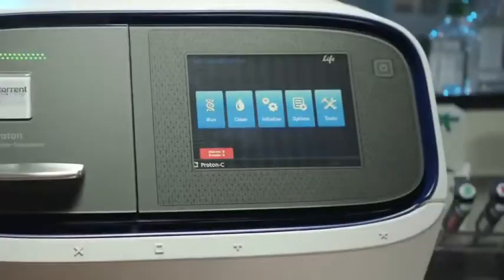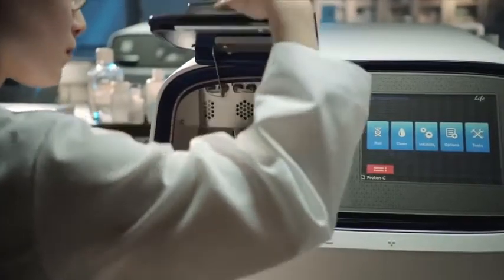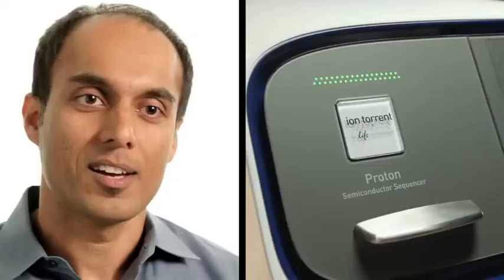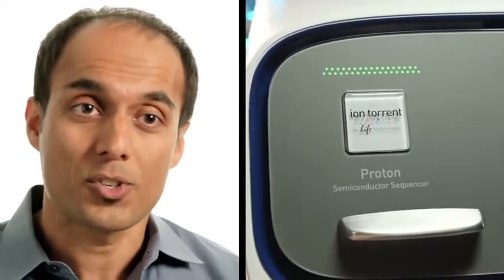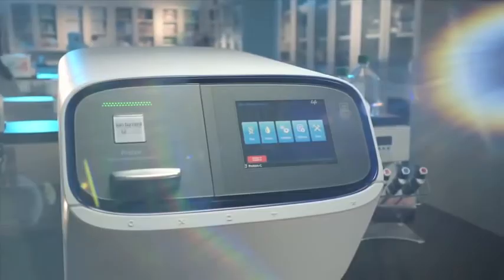Now at IonTorrent, we're leveraging decades of semiconductor technology and computing advances, as well as the same simple pH-sensing chemistry of the Personal Genome Machine. This is going to allow us to do the $1,000 genome, which has been the holy grail for the past decade, and allow us to do it in just a few hours on a benchtop device anybody can afford.